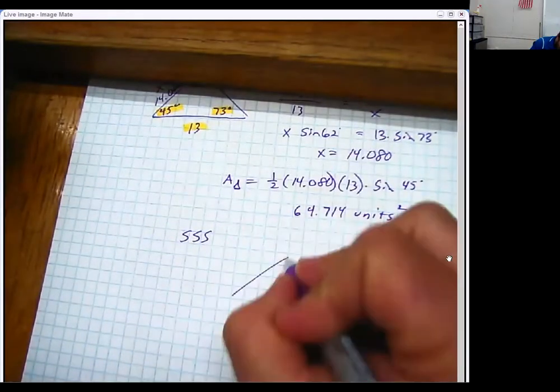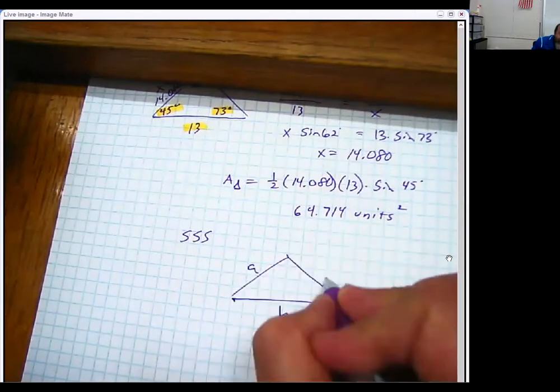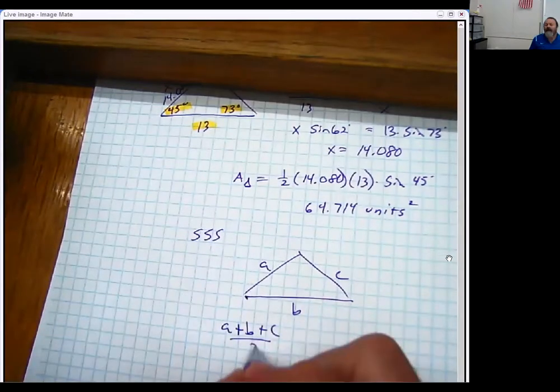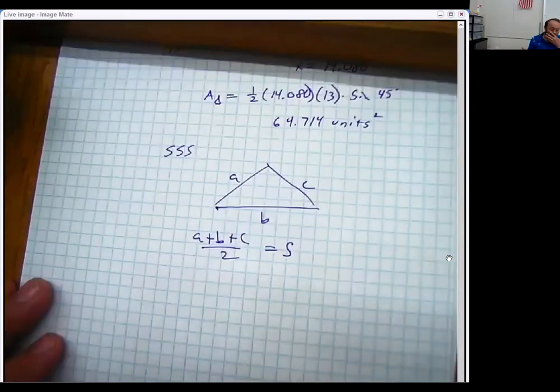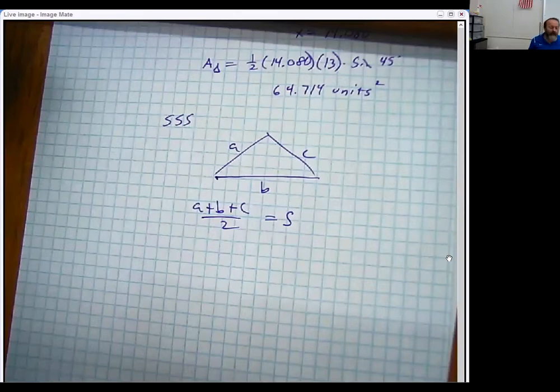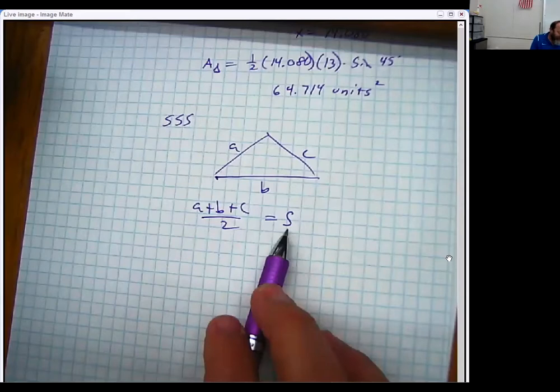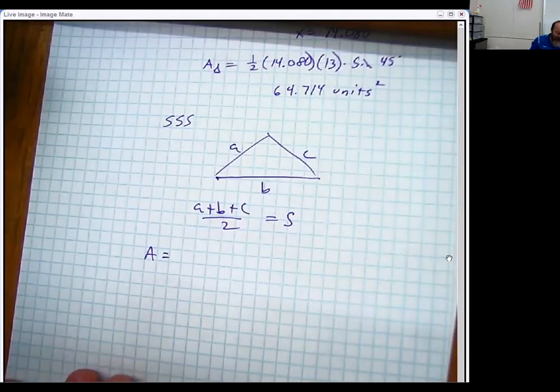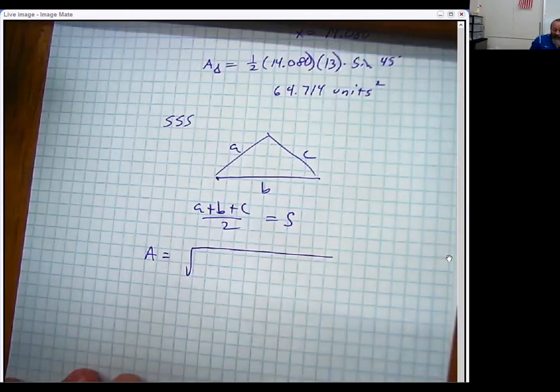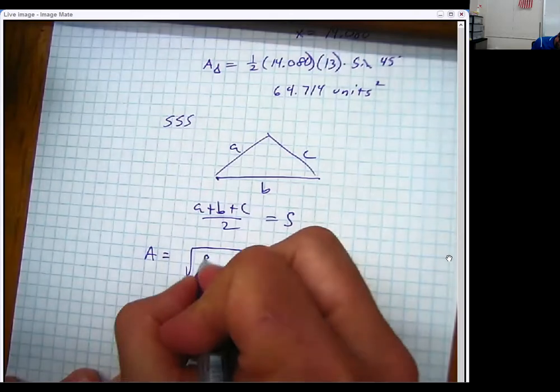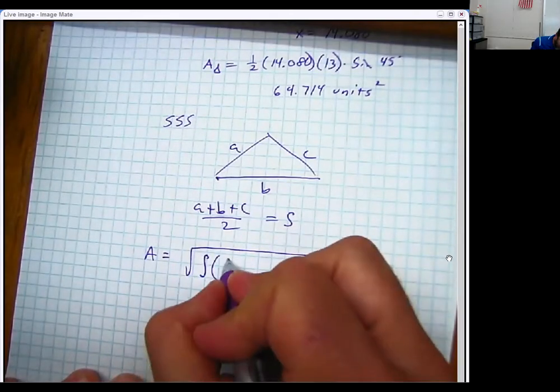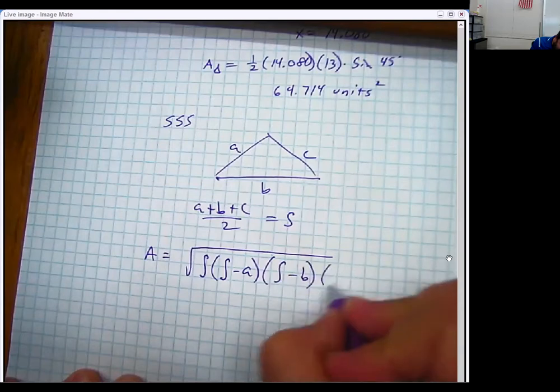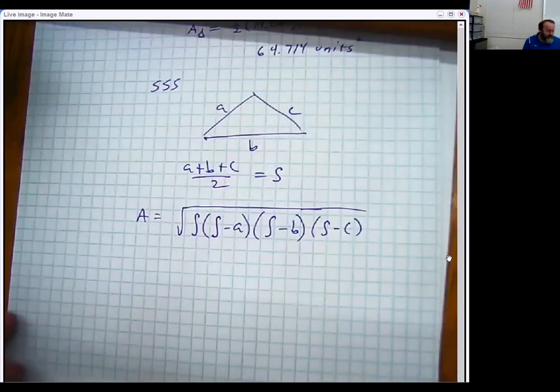But Heron figured out the following, is that if you have a side, side, side triangle, and for fun, let's just call this A, B, and C, he figured out that we're going to call A plus B plus C divided by 2 S. And I wish they didn't call it S. I try to avoid the letter S in my work because it can look like a 5. But he called it S for the semi-perimeter. And what Heron figured out, and there is a proof, it's actually in your textbook, but he found out, this is crazy, that the area of a triangle, if you know all three sides, is the square root of that semi-perimeter S times the difference between that semi-perimeter and side A, the semi-perimeter and B, and the semi-perimeter and C. That is a crazy stinking formula.